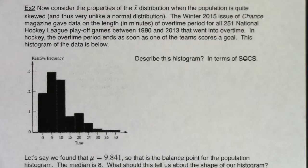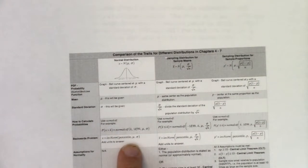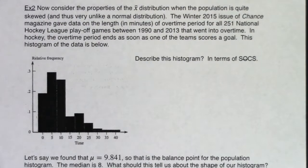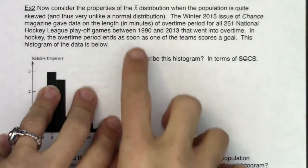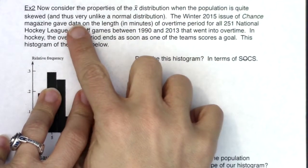Let's take a look at an example where our population distribution is not approximately normal and see what happens when we bump up to the sampling distribution. When I say your population distribution is not approximately normal, this is the version of the problem where we're not starting with something in chapter six. So now consider the properties of the sampling distribution for means when the population is quite skewed.